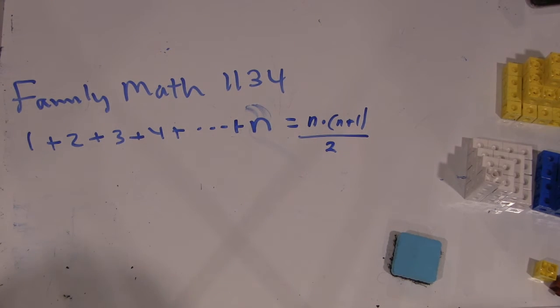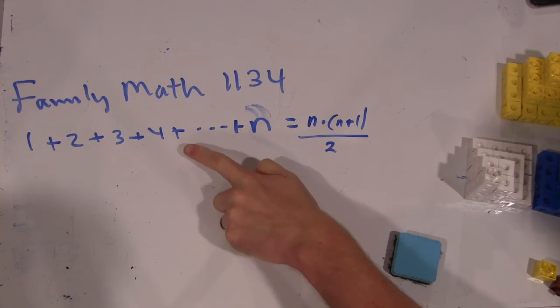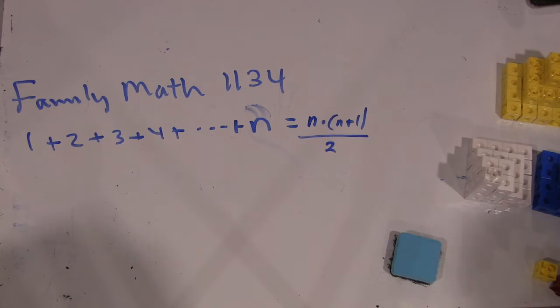Alright, good. So it seems like it works and we could even check it up to 4 because that's 10. 1 plus 2 plus 3 plus 4. So you get 4 times 5, 20 divided by 2. Alright, good. So we seem to think that this formula is true.